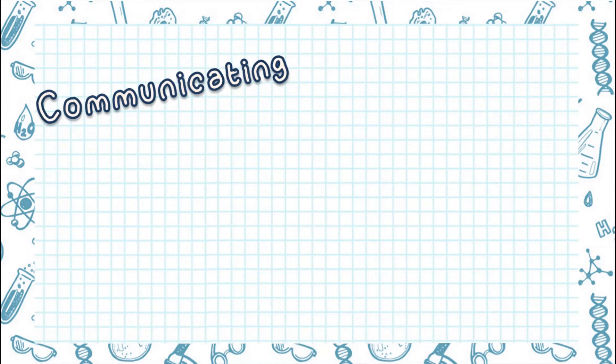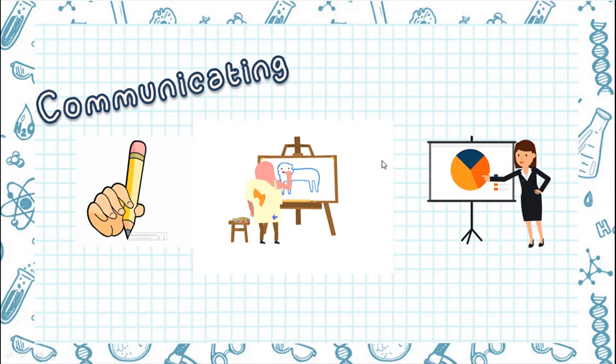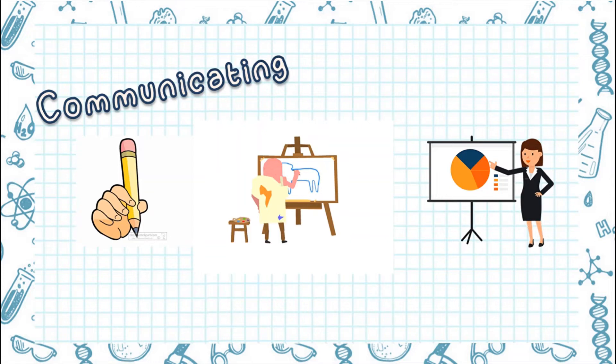Next, let's go to communicating. Communicating means to write down, draw, or tell your ideas to other people. Scientists always use this to communicate to other scientists.